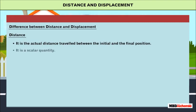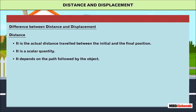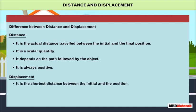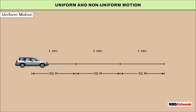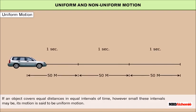Difference between distance and displacement: Distance is the actual distance traveled between the initial and final positions; it is a scalar quantity and depends on the path followed, and is always positive. Displacement is the shortest distance between the initial and final positions; it is a vector quantity, does not depend on the path, and can be positive, negative, or zero.